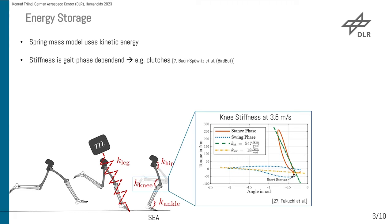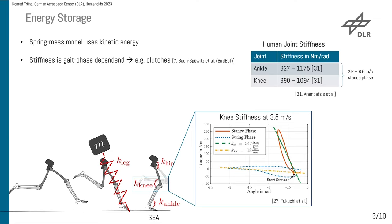This stiffness is gait-phase dependent, which might be a reason why Alexander Badri-Spröwitz used clutches in his famous Bird-Bot design. Taking a look at the human joint stiffness from 2.6 to 6.5 m/s in the stance phase, you can see that the ankle and knee are varying a lot — from approximately 300 to 1200 Nm/rad. So, to achieve versatile running locomotion, you need variable stiffness.